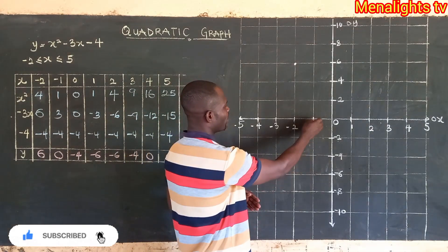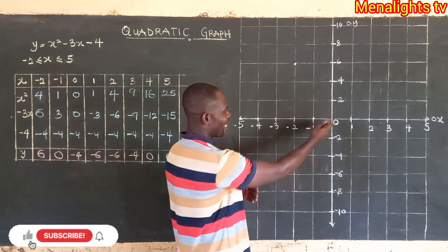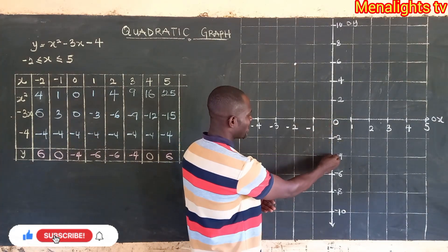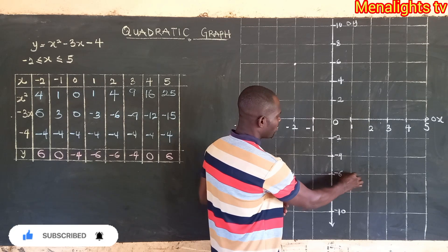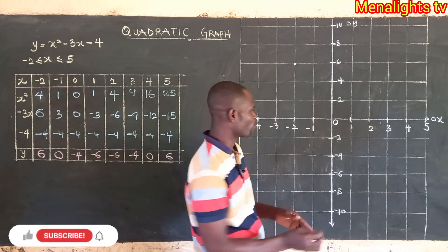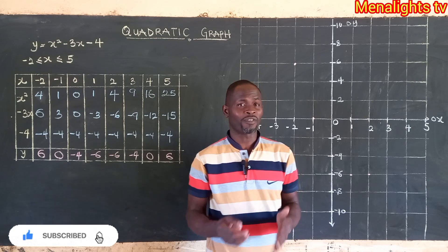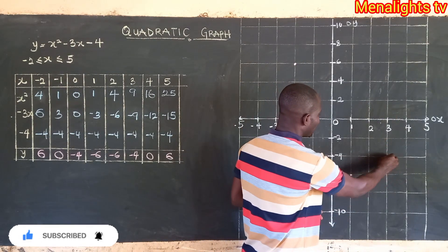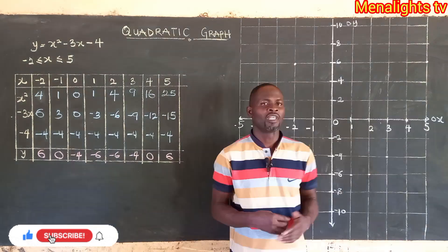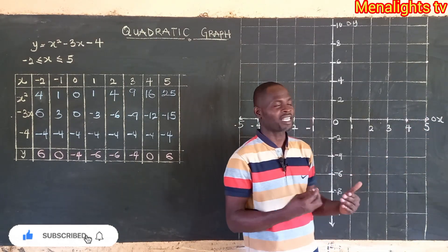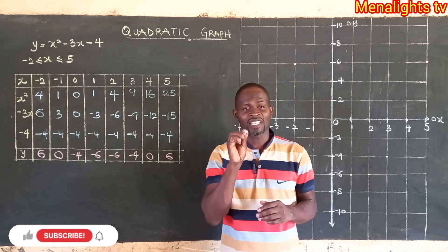Then negative 1 and 0 is plotted here. We also have 0 and negative 4 — x is 0 and y is negative 4, so that point is here. Then 1 and negative 6 is here. And 2 and negative 6 is also here. Then 3 and negative 4 is here. And 4 and 0 is here. Then 5 and 6 is here. Now that we have successfully plotted all our points, we are going to join them using our freehand to form the curve.